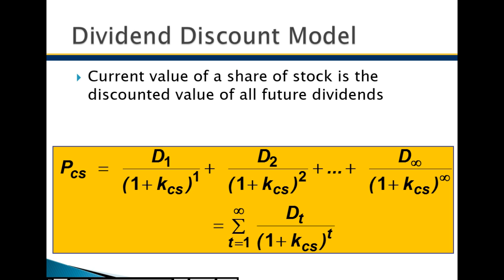The current value of a share of stock is the discounted value of all its future dividends. For preferred stock — a perpetuity paying dividends forever — we discount all dividends to infinity. We divide dividends by (1 + K) to the power of the years of discounting. It's easier if dividends are identical or grow at a consistent rate. Variable dividends require calculating each year separately; zero-growth or constant-growth dividends allow simpler equations.